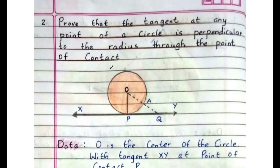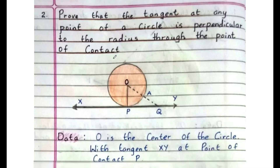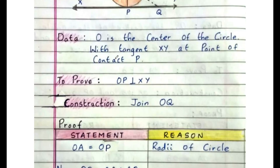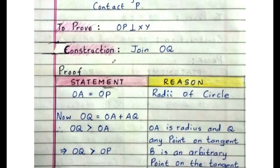Next theorem: prove that the tangent at any point of a circle is perpendicular to the radius through the point of contact. This is also a 3-mark theorem. You can go through it once before going to the exam.